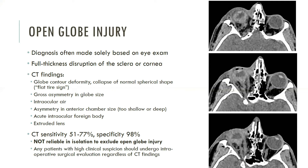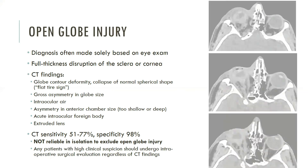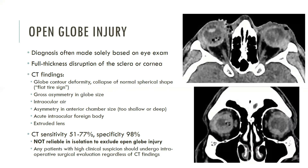Here we have a patient with a right-sided open globe injury with a grossly deformed globe, extensive vitreous hemorrhage, retrobulbar hematoma, and right orbital fractures. The next images demonstrate bilateral open globe injuries in a patient secondary to a blast injury. There is intraocular air and vitreous hemorrhage on the right, and the left globe demonstrates vitreous hemorrhage and a dislocated lens that has fallen to the dependent posterior segment.